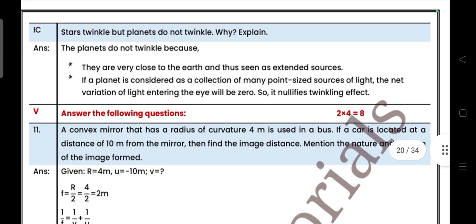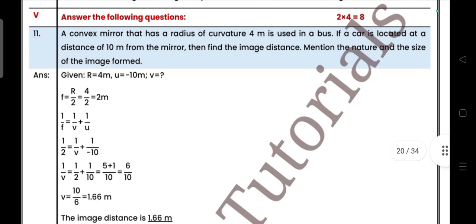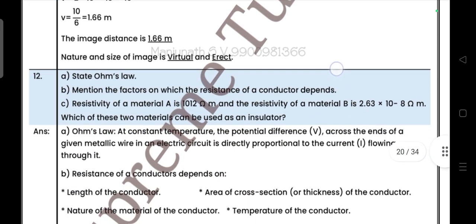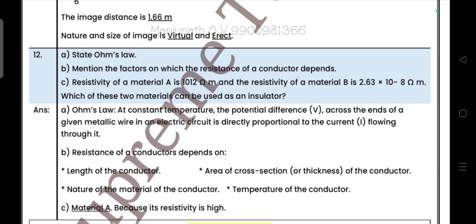Next, stars twinkle but planets do not twinkle, why? Explain. Next, come to four mark question. A convex mirror that has a radius of curvature 4 centimeter is used in the bus. If a car is located at the distance of 10 meter from the mirror, then find the image distance, mention the nature and size of the image. Next, state Ohm's law, mention the factors on which resistance of a conductor depends. Resistivity of a material A is 1.0 × 10^-12 ohm meter and resistivity of a material B is 2.6 × 10^8 ohm meter. Which of these two materials can be used as an insulator?